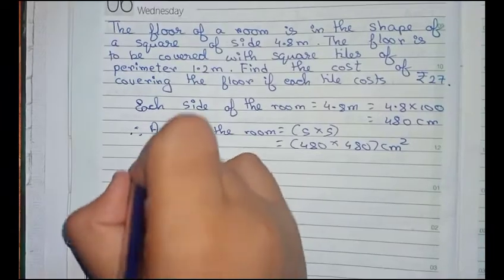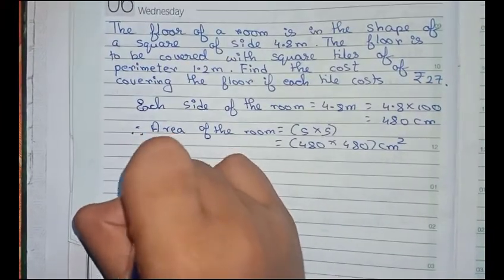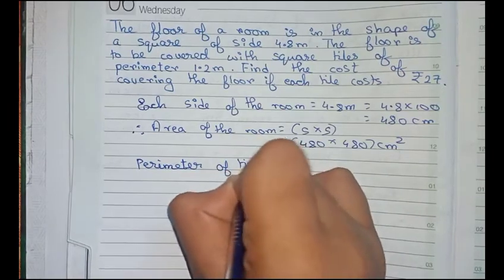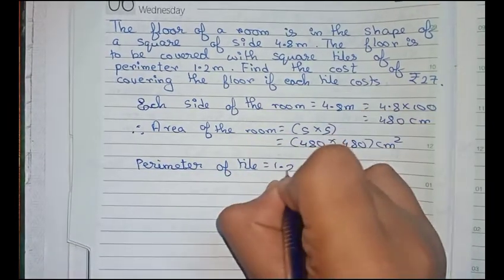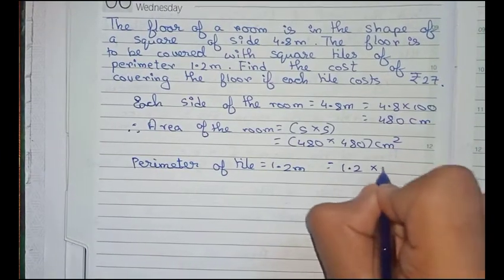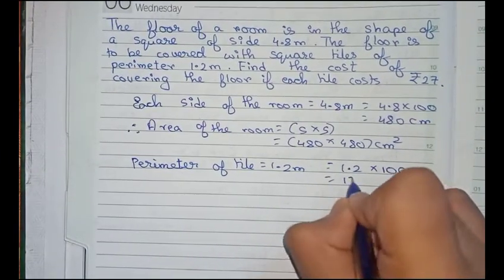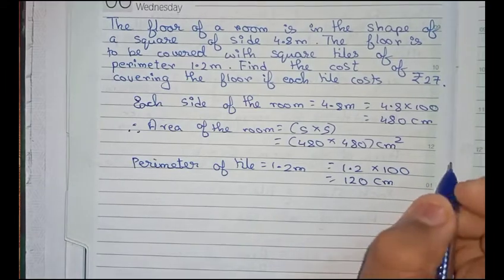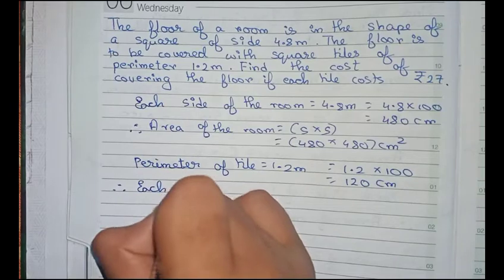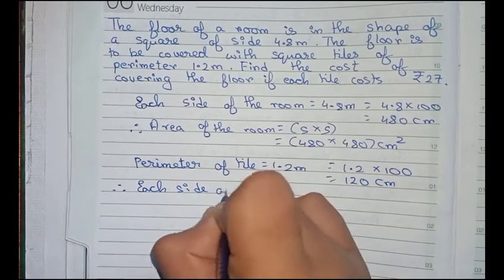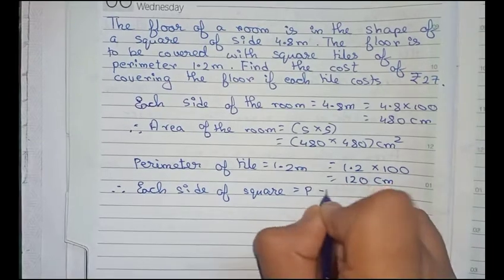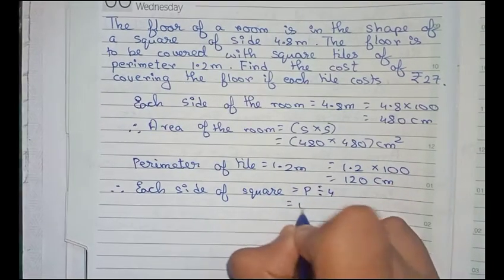The perimeter of tile is 1.2 meters. Converting to centimeters, that is 1.2 into 100 equals 120 centimeters. Therefore, each side of square equals perimeter divided by 4, equals 120 divided by 4, which equals 30 centimeters.